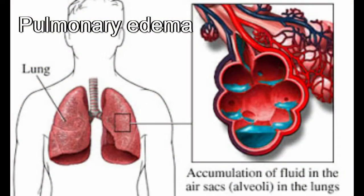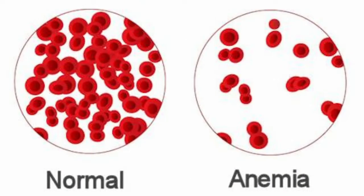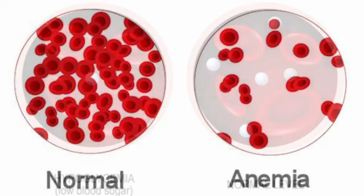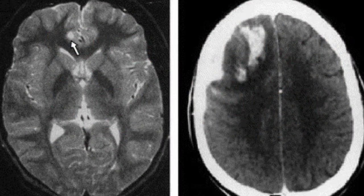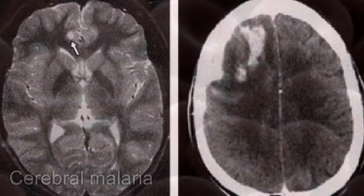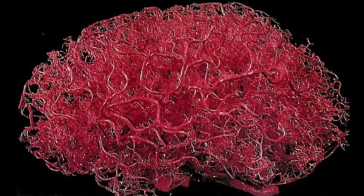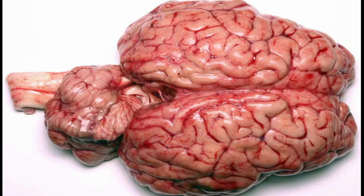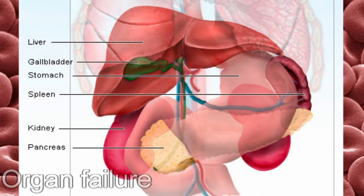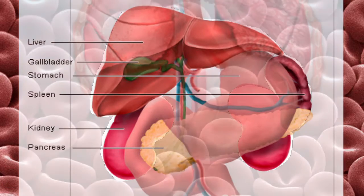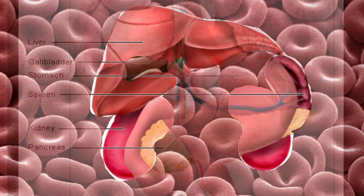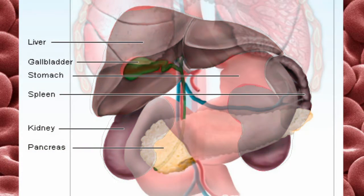If malaria is not treated, it can become a huge threat to the body. The lungs could begin to fill with fluid. Severe anemia can deprive the organs of oxygen, and some species can cause low blood sugar. One of the more dangerous complications is cerebral malaria — red blood cells infected with malaria traveling to the brain can become stuck within small capillaries, cutting off blood flow, starving the brain of oxygen, and causing it to swell. Another complication is organ failure: the liver, spleen, and kidneys can become overwhelmed by the parasite and shut down, resulting in a domino effect leading to total organ failure and death.